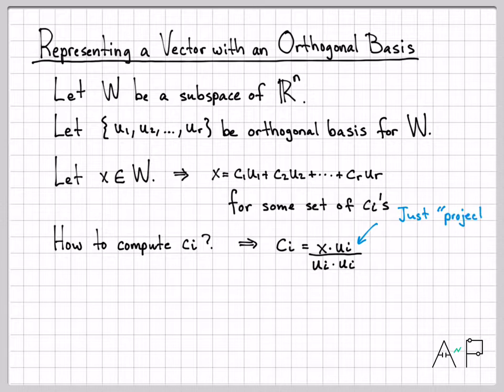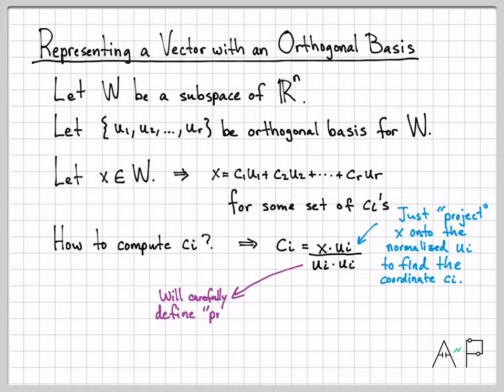This right here is really what we call a projection. So what we're doing is we're taking x and we're projecting x onto the normalized vector u_i to find the coefficient - how much of x lies in that direction. In the next video, we'll actually very carefully define this. We're going to give this a definition and a formal name and we're going to call it a projection or an orthogonal projection.